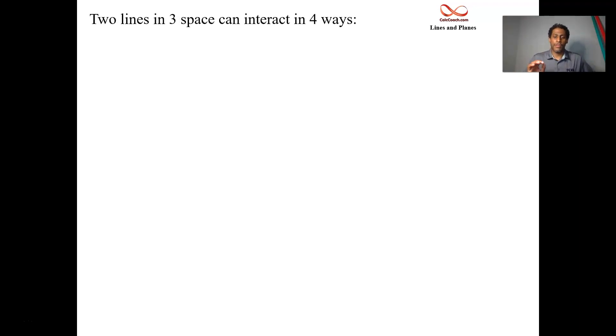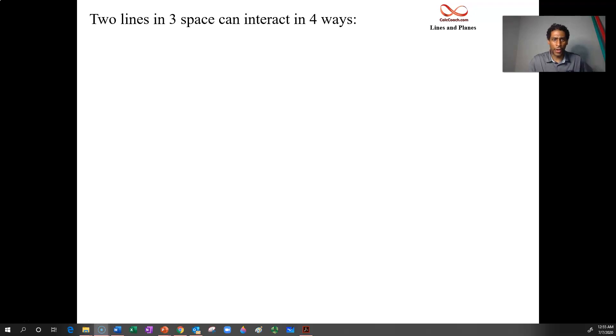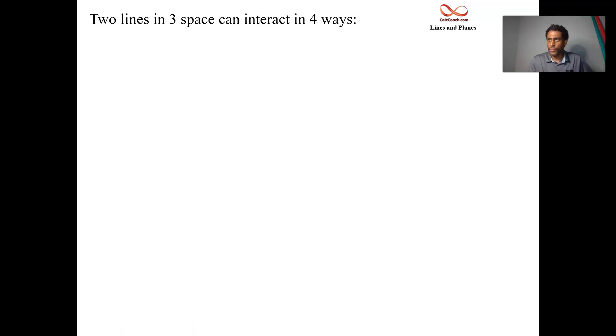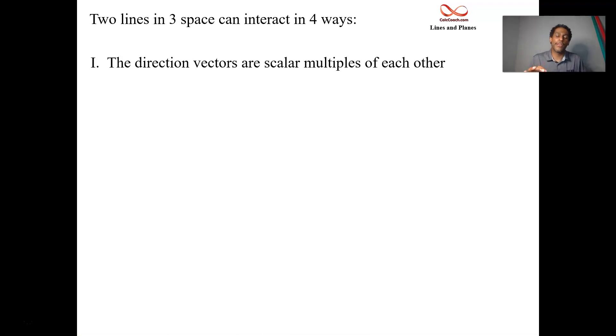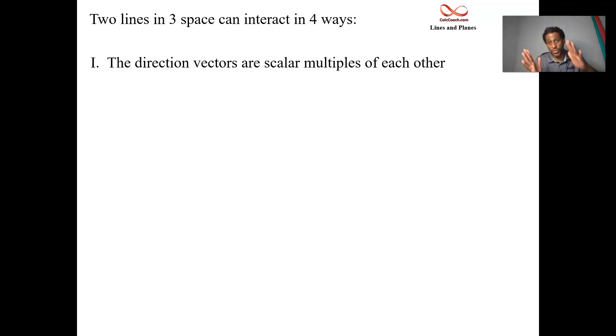Remember in 2D, two lines can be parallel, they can be intersecting, or they can be the exact same line. So what is it in 3-space? We're talking about parametric versions of equations of lines. It will first depend on whether the two lines have direction vectors that are scalar multiples of each other.